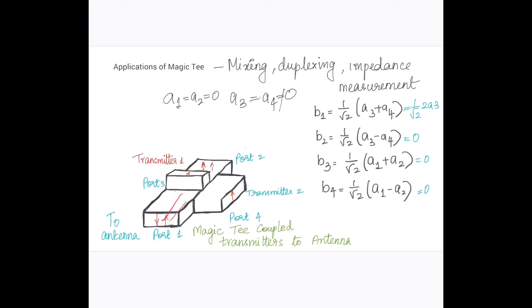So to port 1 antenna can be connected which will be receiving double the power than what has been delivered by the transmitter. So this is a typical application of magic tee where double output power is obtained.